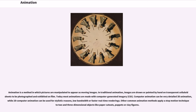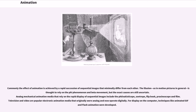Other common animation methods apply a stop-motion technique to three-dimensional objects like paper cutouts, puppets, or clay figures. Commonly the effect of animation is achieved by a rapid succession of sequential images that minimally differ from each other. The illusion, as in motion pictures in general, is thought to rely on the phi phenomenon in beta movement, but the exact causes are still uncertain.